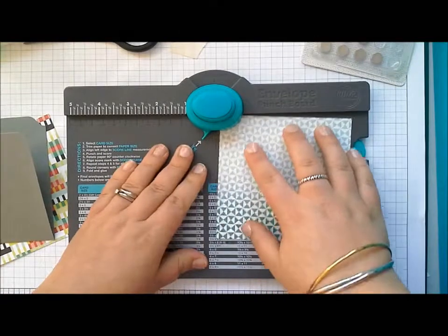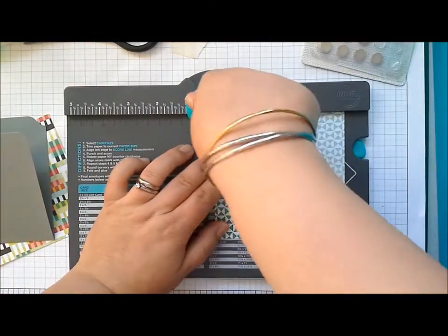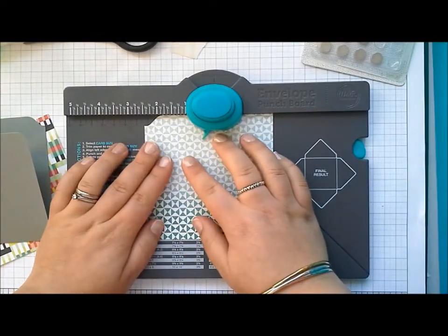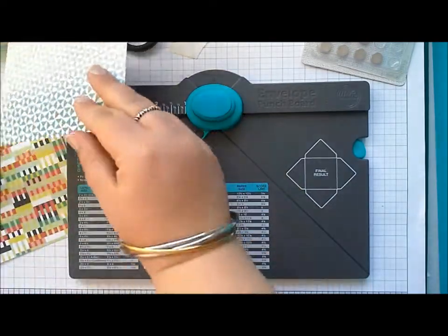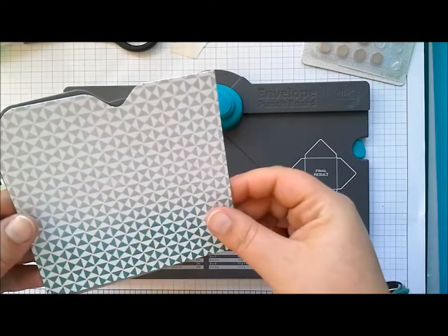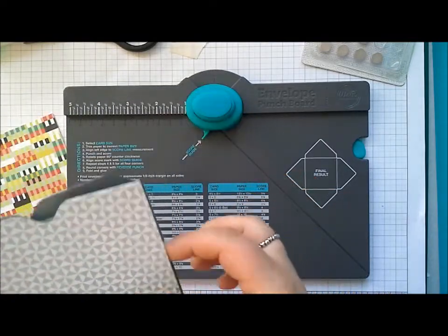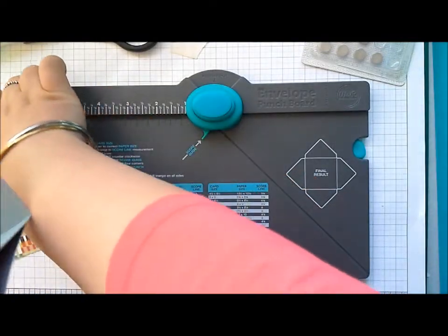I'm going to line this up, punch, move it along to two and a half. That's why I say you need to remember whichever measurement you've used. That's going to be the piece for the front of my card which doesn't look like it's going to line up right now but it will.